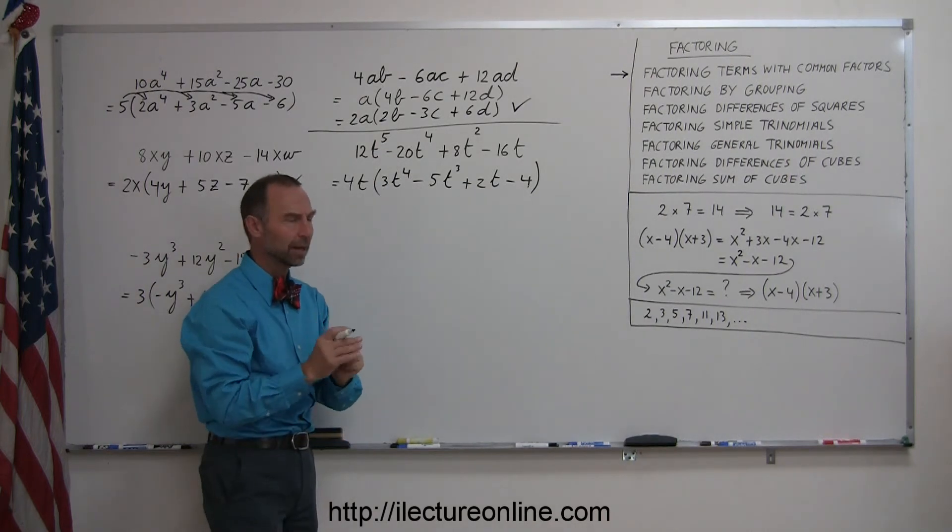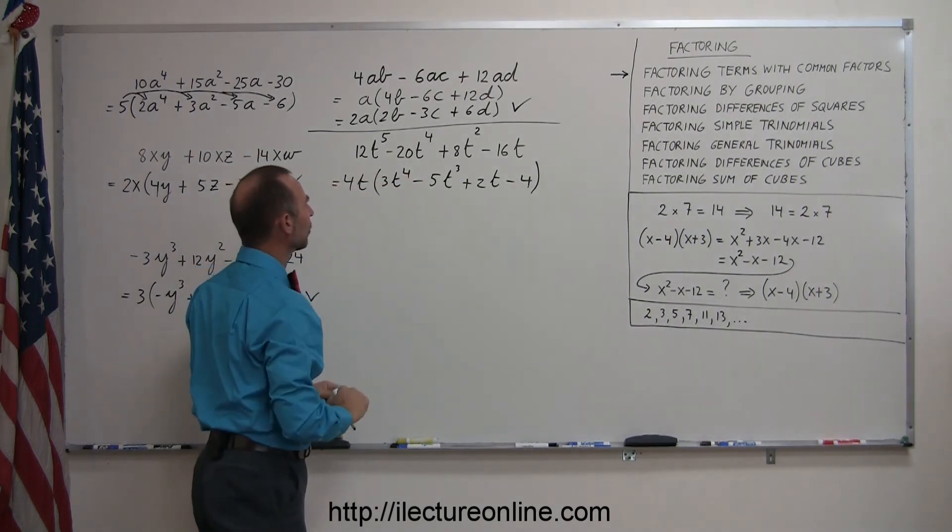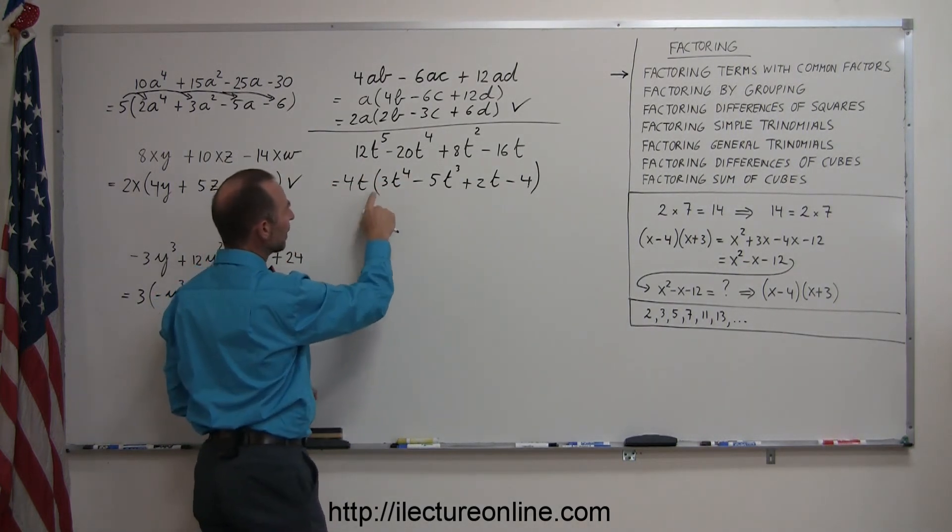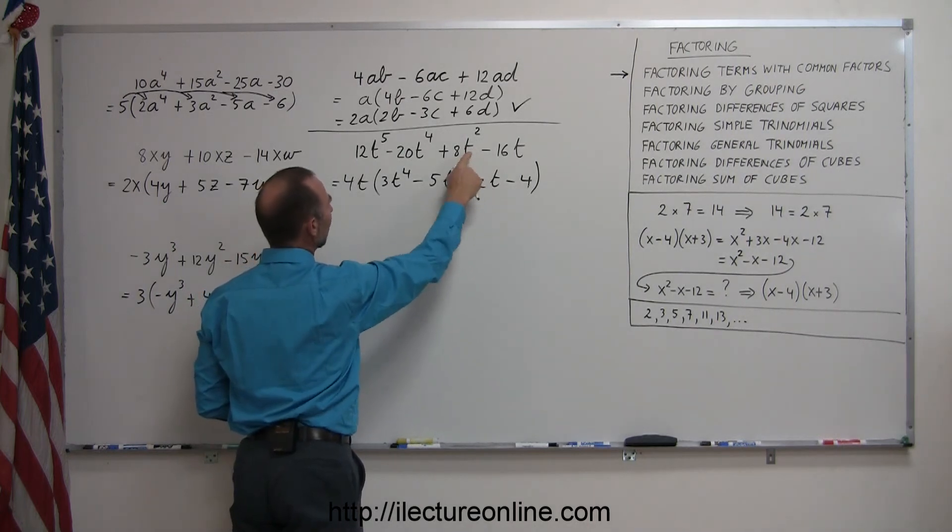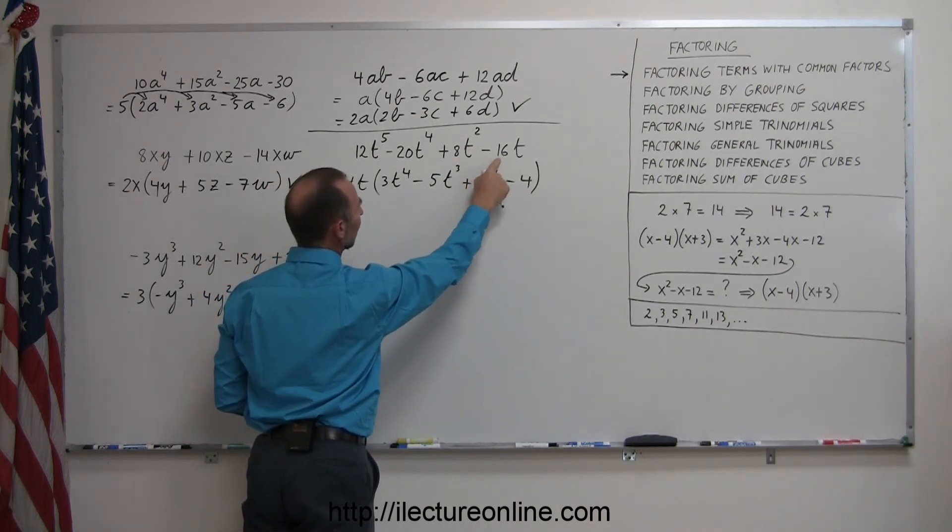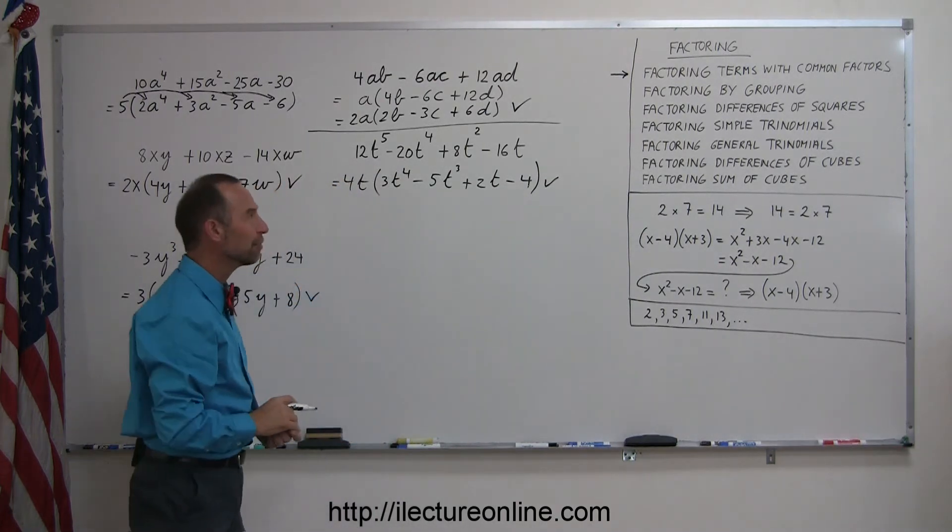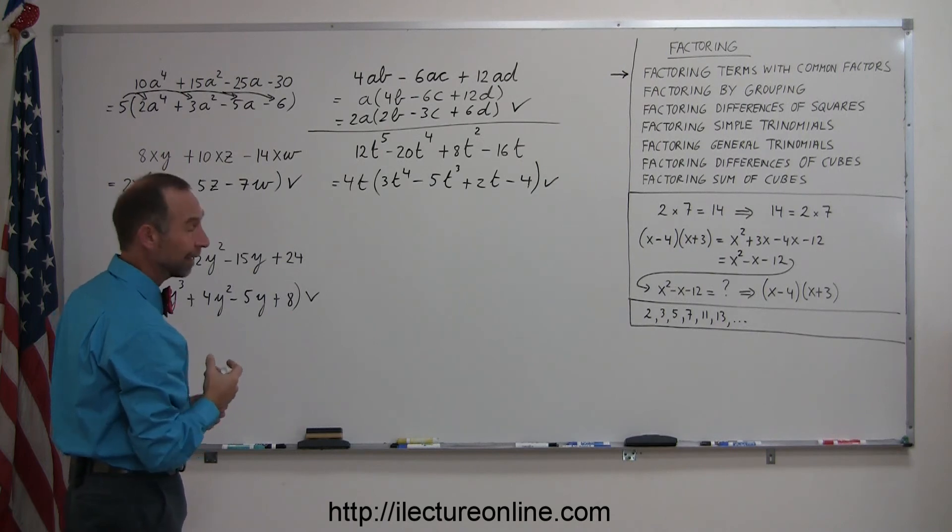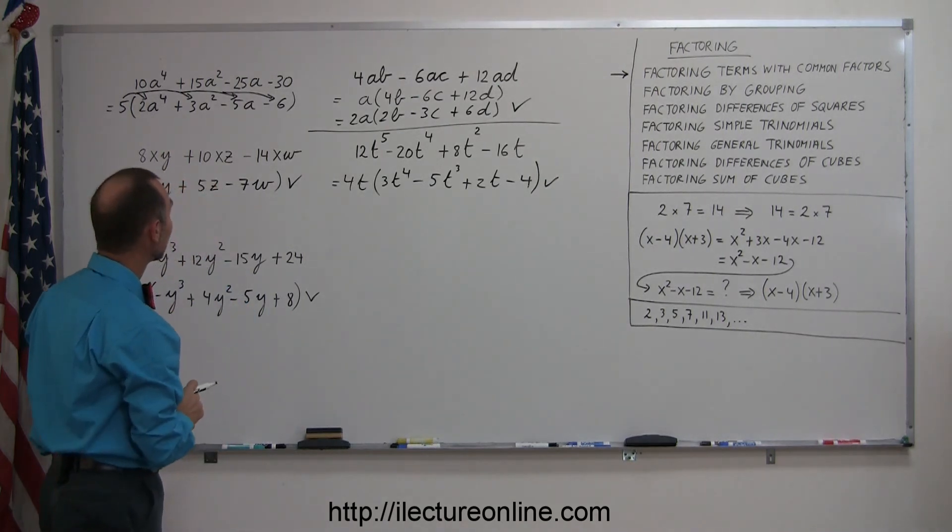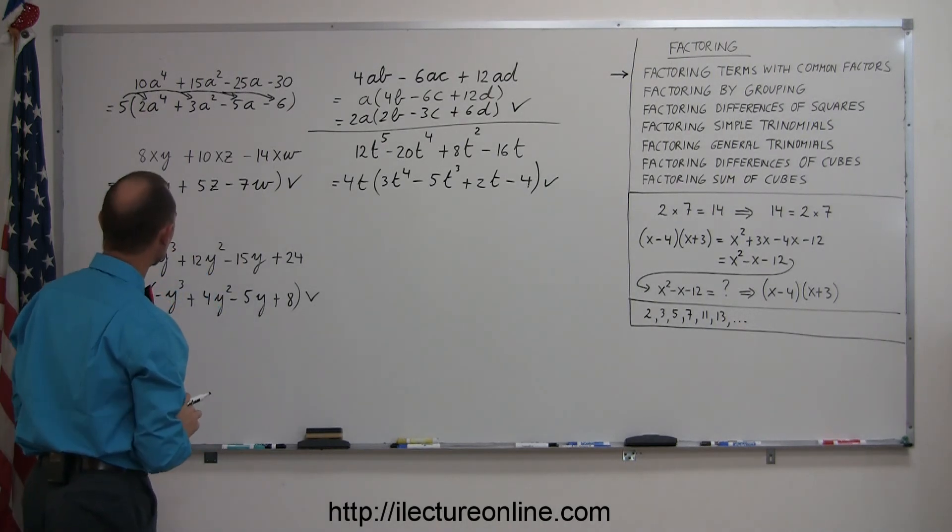4t times minus 5t cubed is minus 20t to the fourth, 4t times 2t is 8t squared, and 4t times minus 4 is minus 16t, so this one also seems to check out. So that's how you factor, by taking a group of terms, and finding the common factors, and just simply bringing them out, or factoring that algebraic expression.